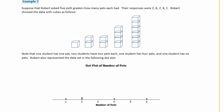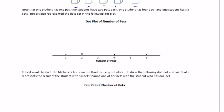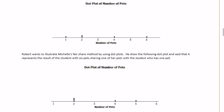Example 2: Suppose Robert asked five 6th graders how many pets each had. Their responses were: 2, 6, 2, 4, 1. Robert showed the data with cubes — two stacks of 2, one stack of 1, one stack of 6, and one stack of 4. He also represented this on a dot plot: one student has 1 pet, two students have 2 pets, one student has 4 pets, and one student has 6 pets.